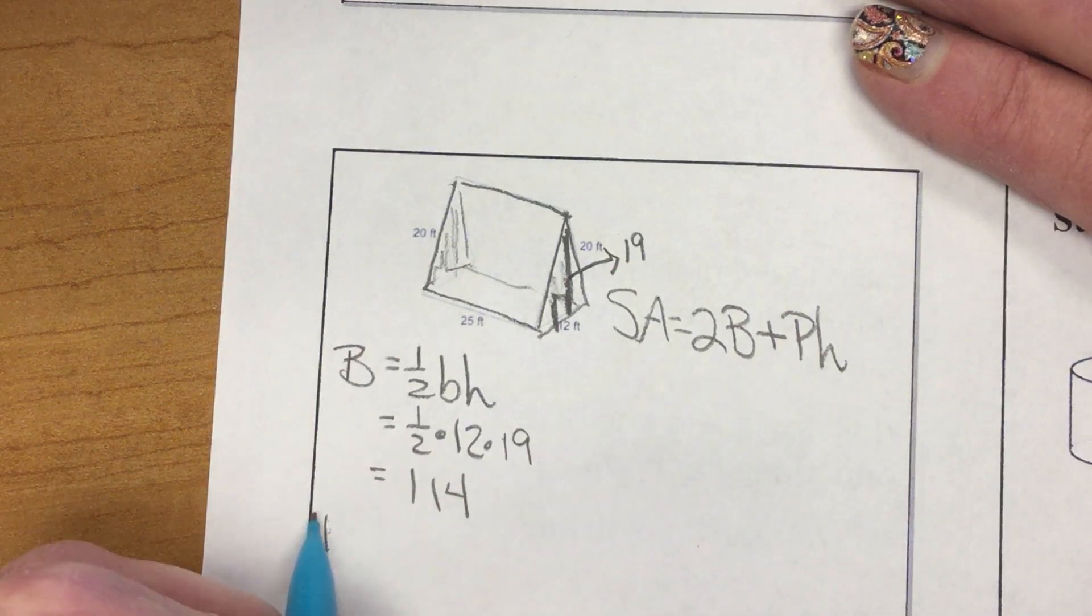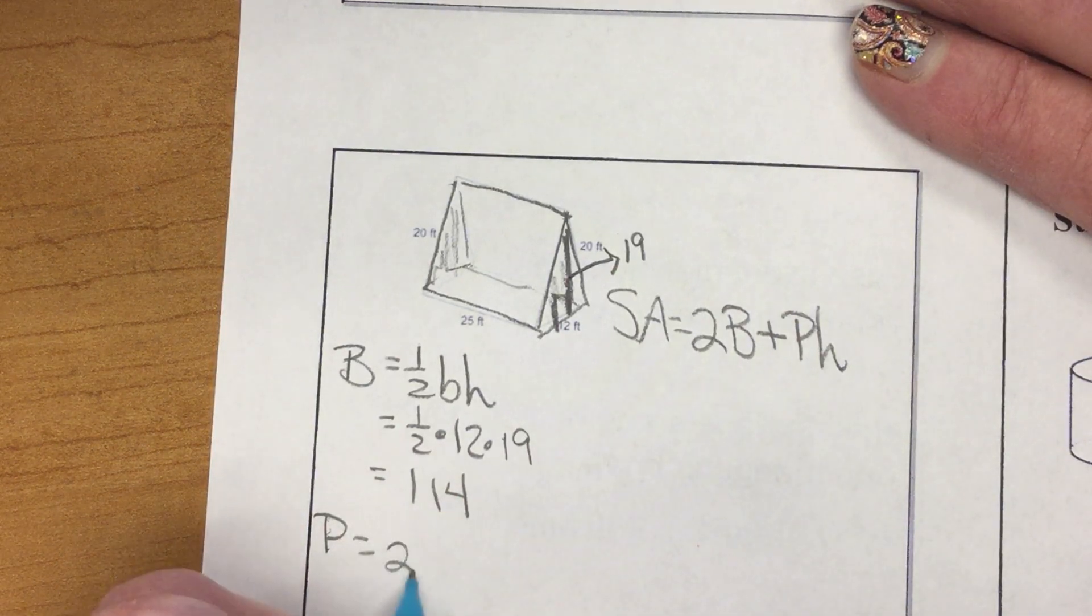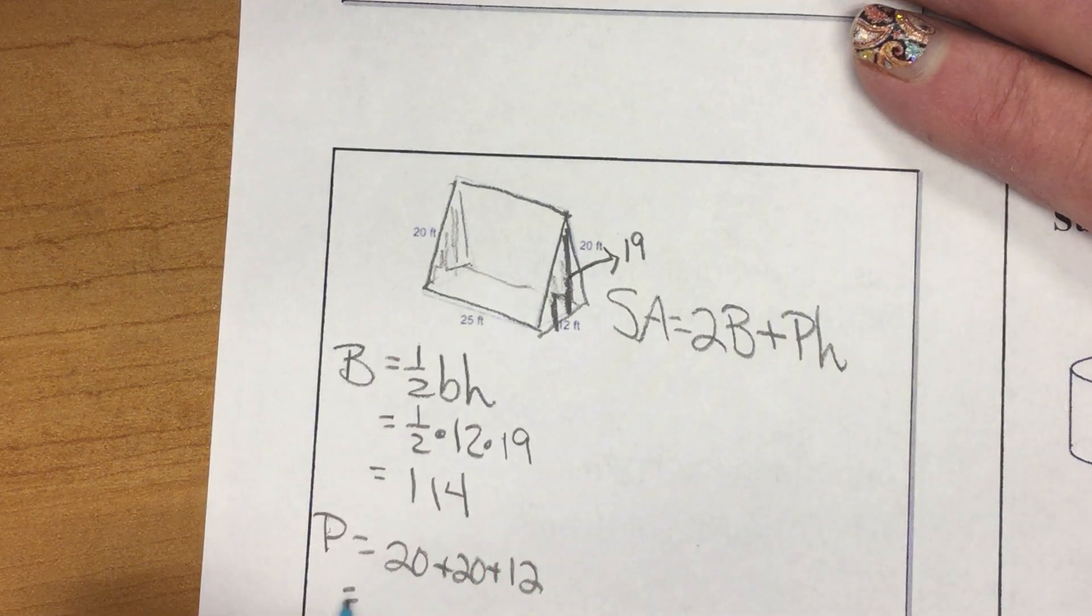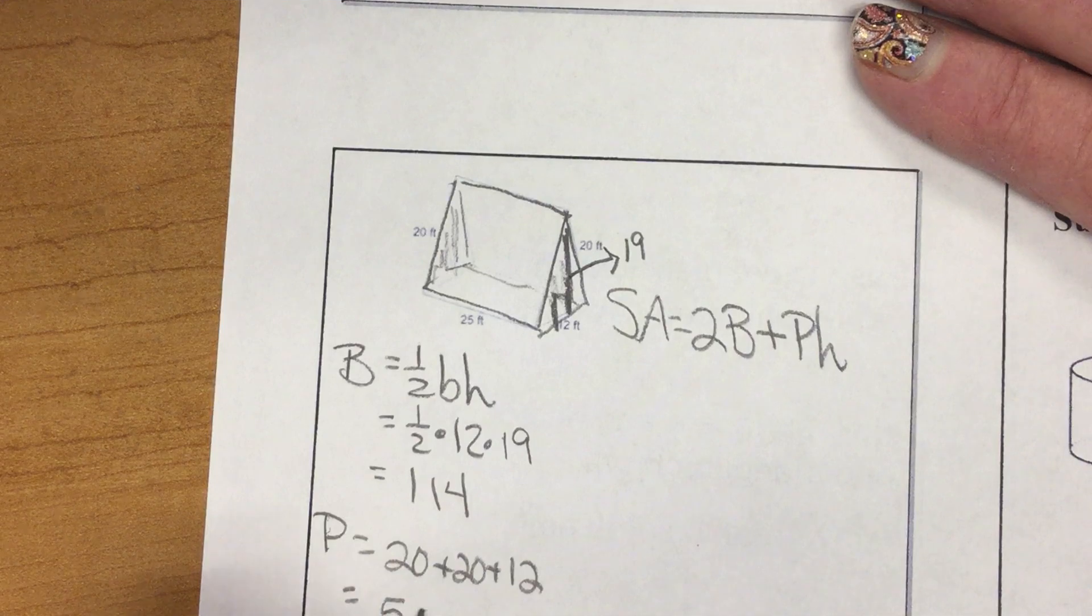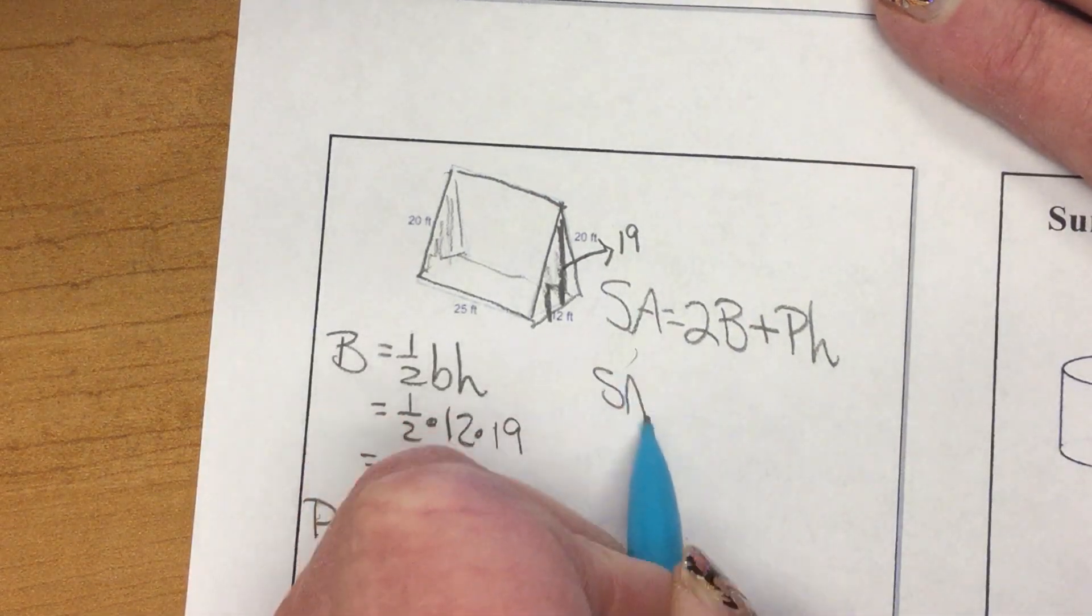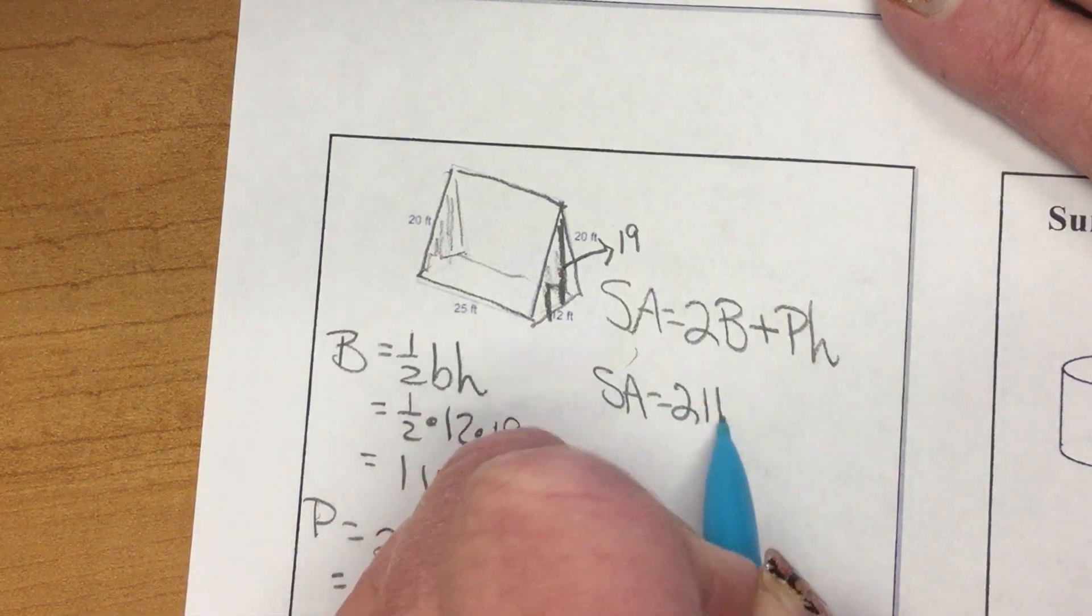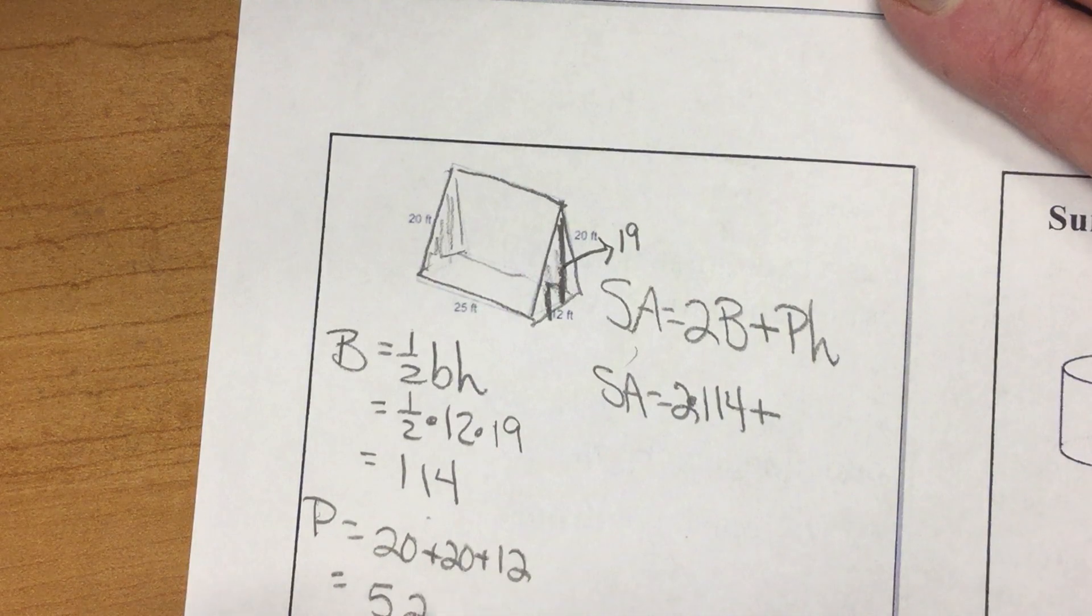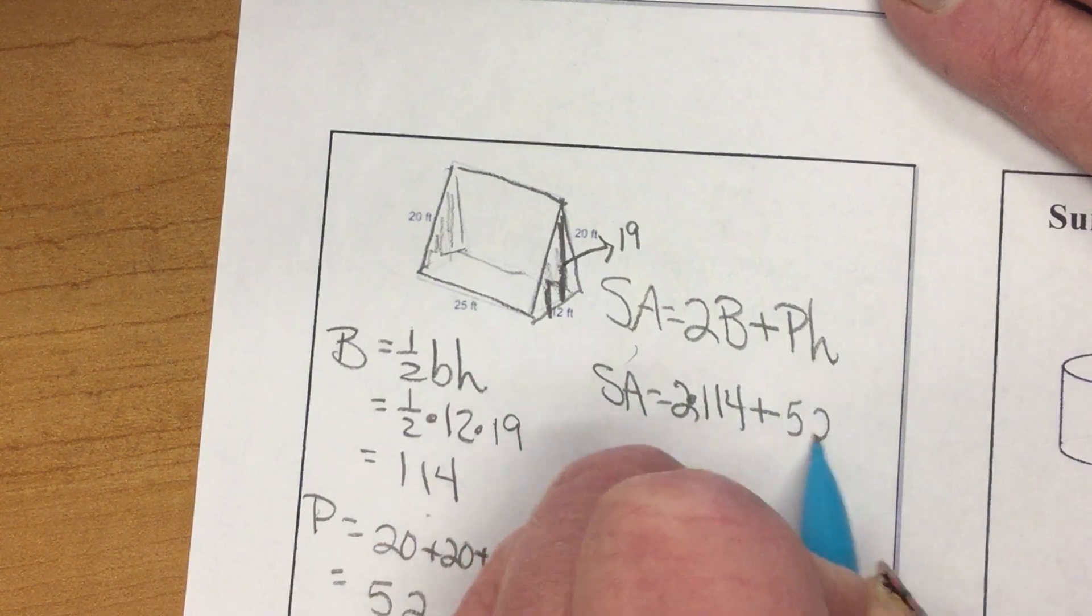My perimeter of that base is 20 plus 20 plus 12, three sides to the triangle, 52. So, now we substitute. Surface area is 2 times 114 plus perimeter, 52 times.